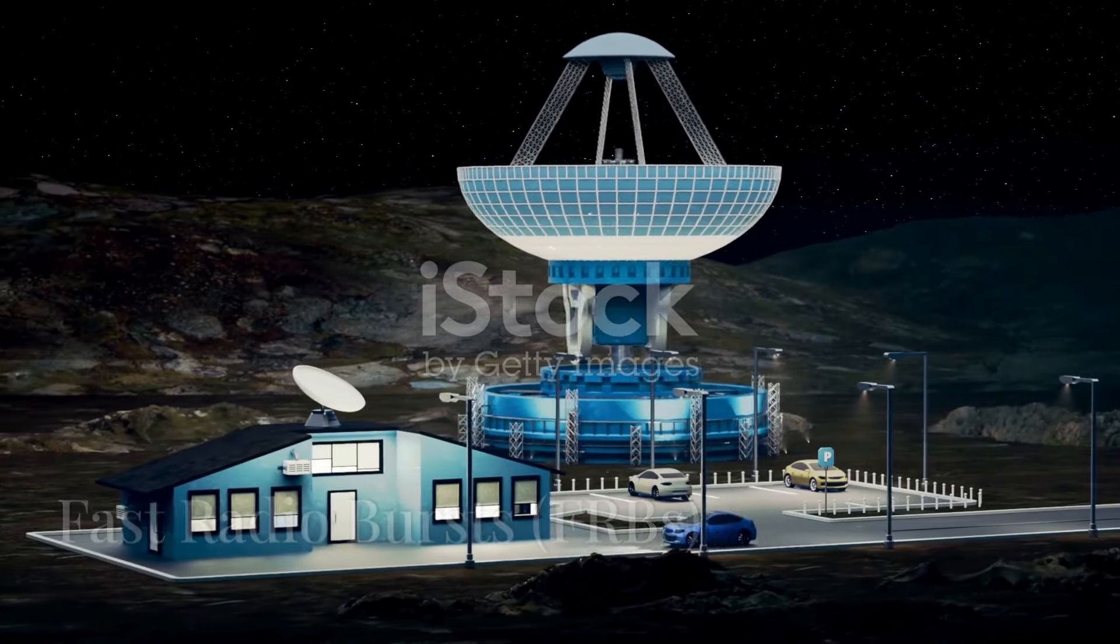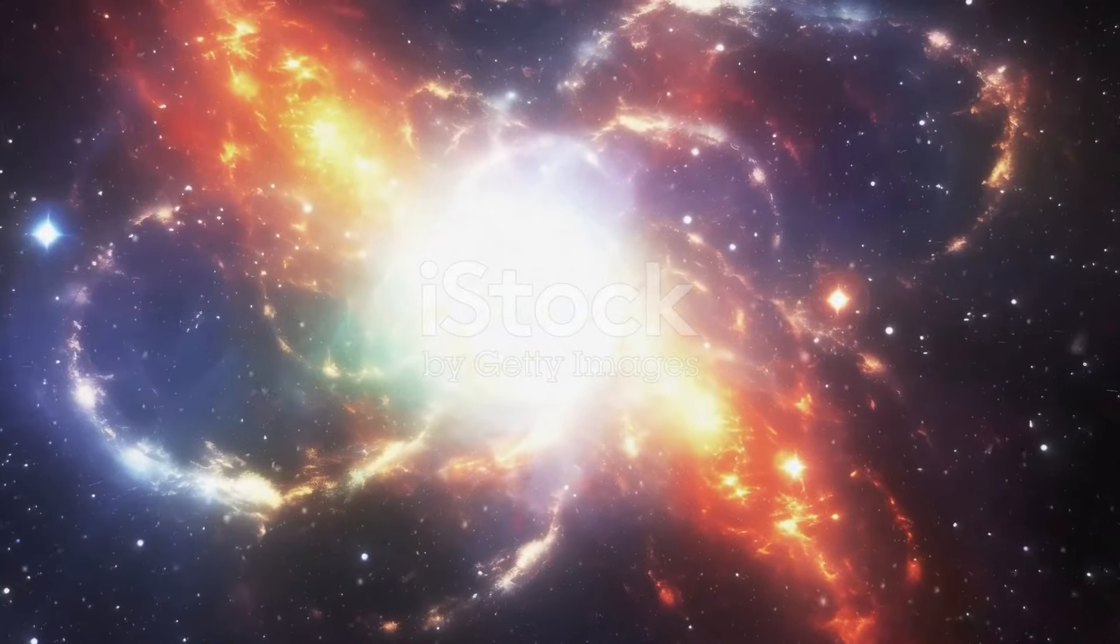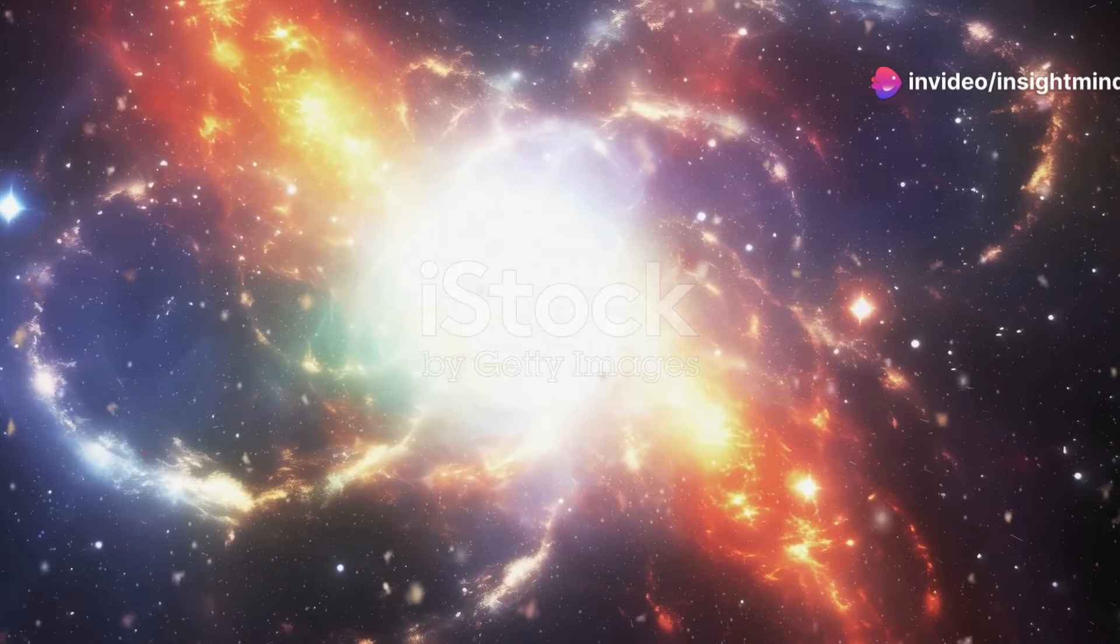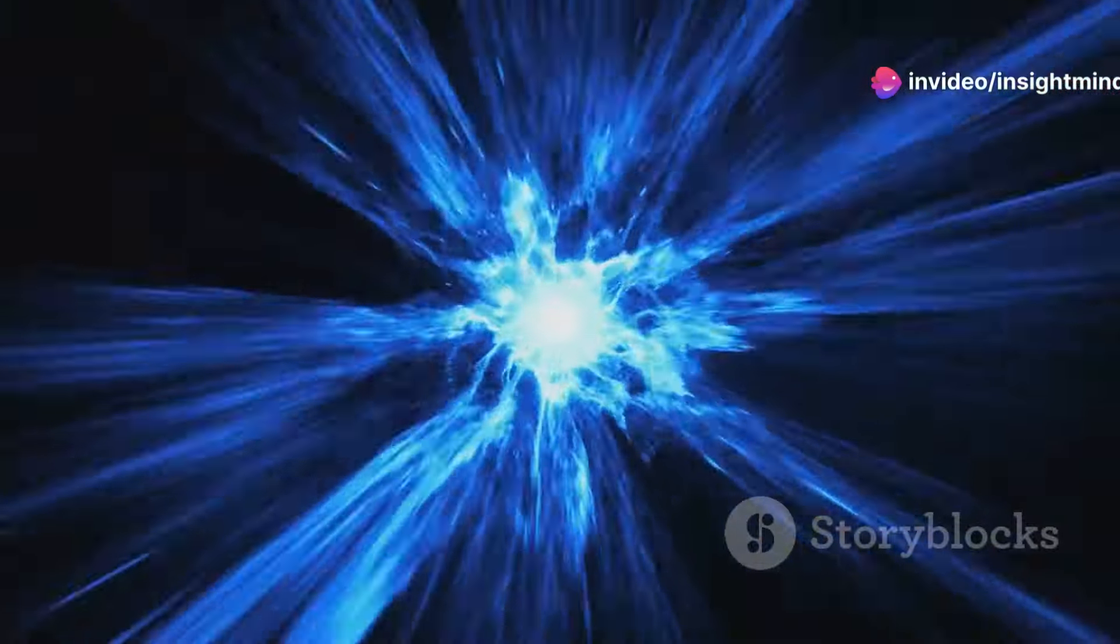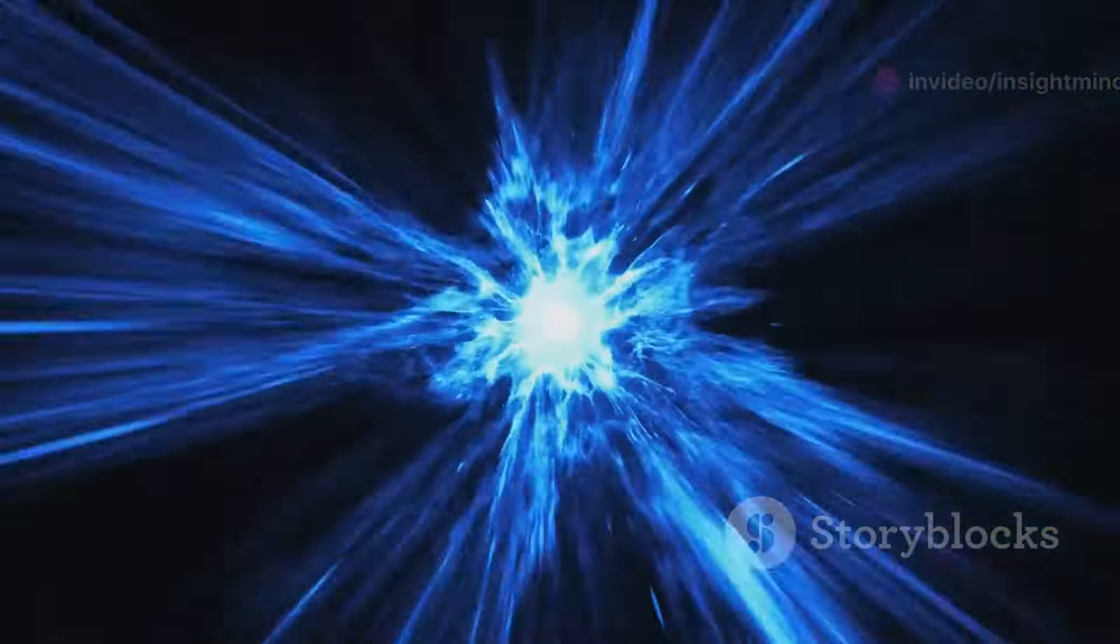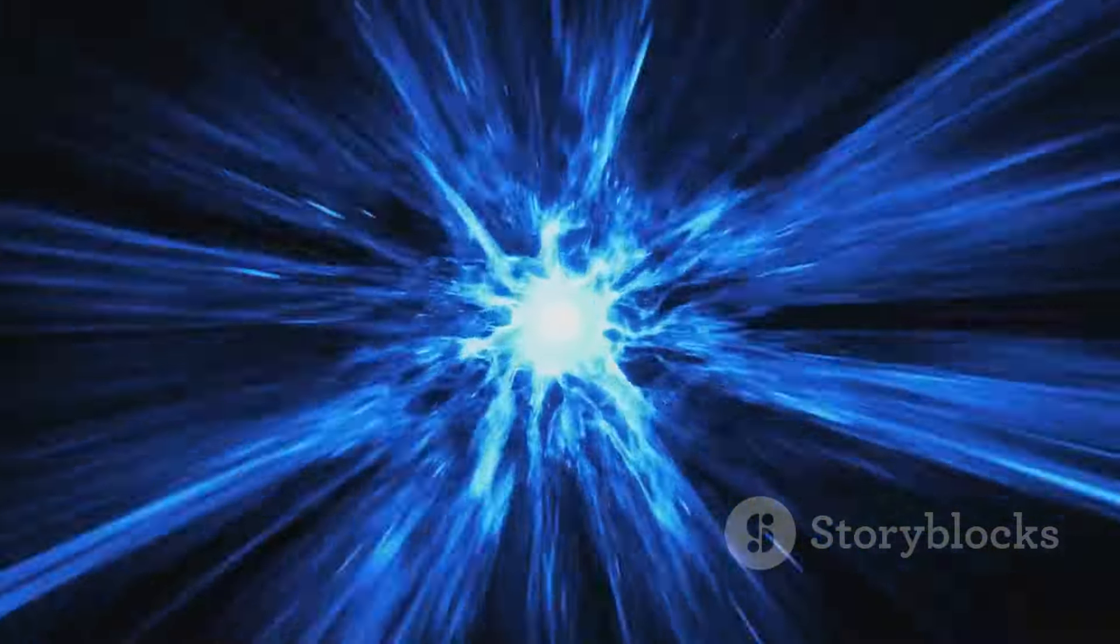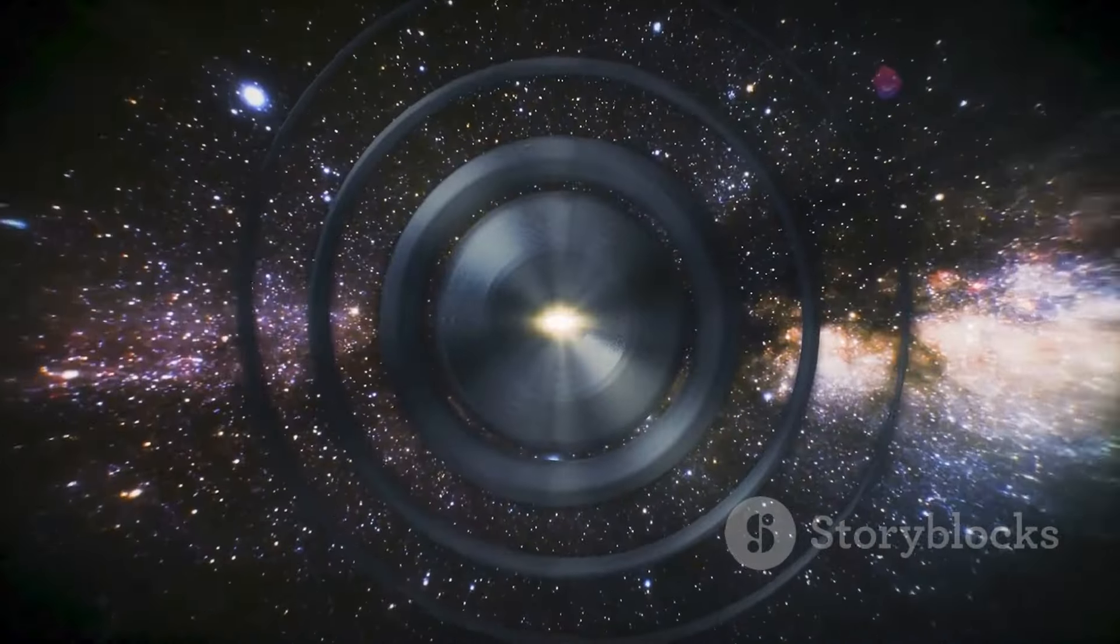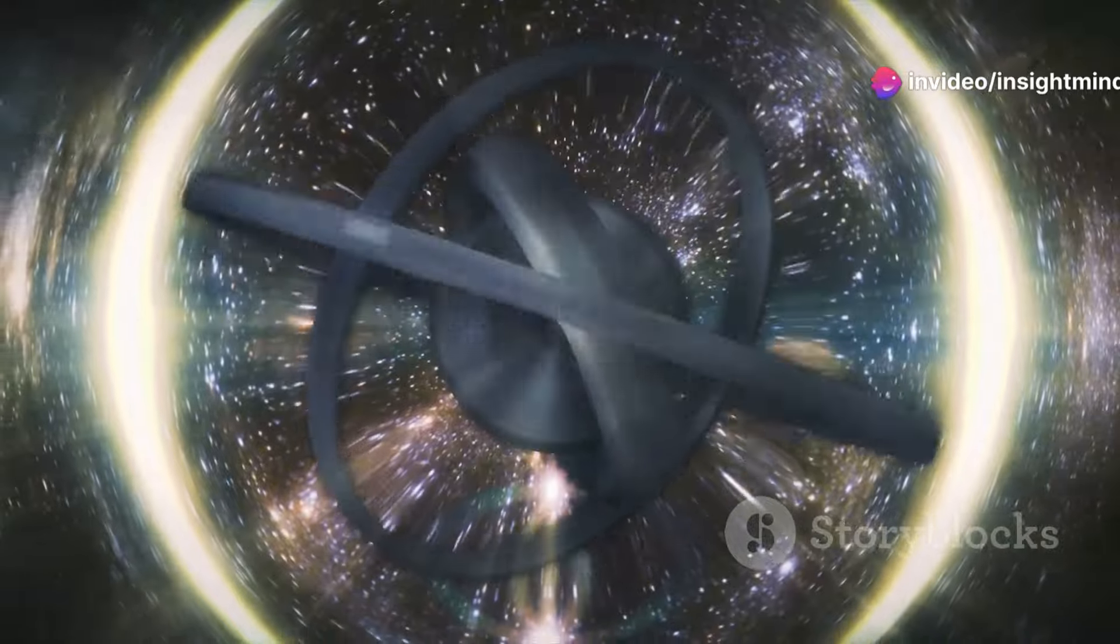Chapter 4: Fast Radio Bursts, or FRBs. Fast radio bursts are brief but incredibly powerful bursts of radio waves originating from distant galaxies. Discovered in 2007, these bursts last only milliseconds but release more energy than the sun does in an entire year. The origin of FRBs remains one of the biggest mysteries in astronomy, with theories ranging from neutron stars to alien technology.